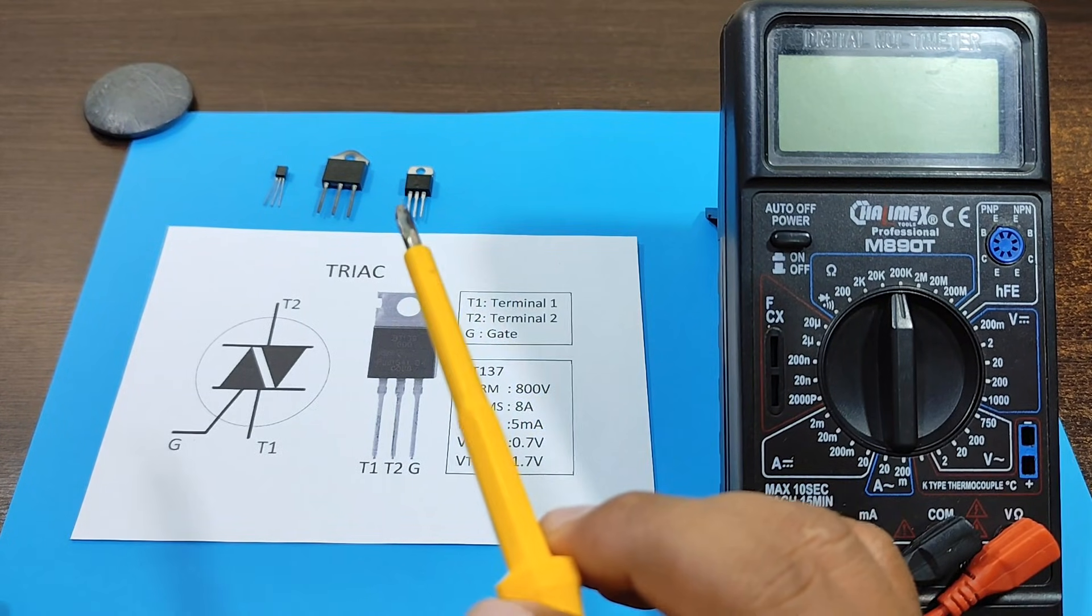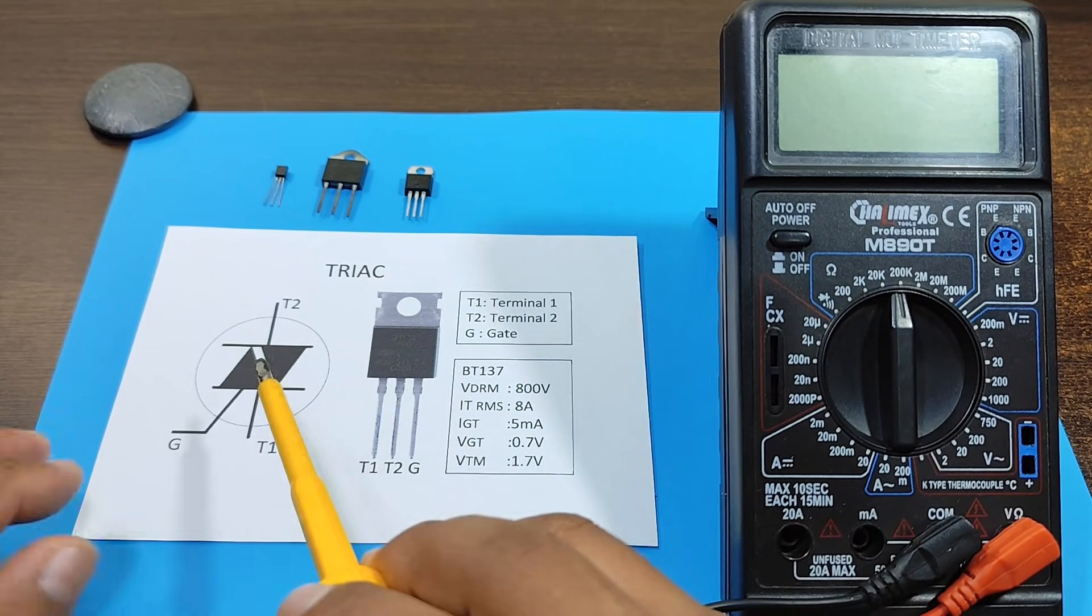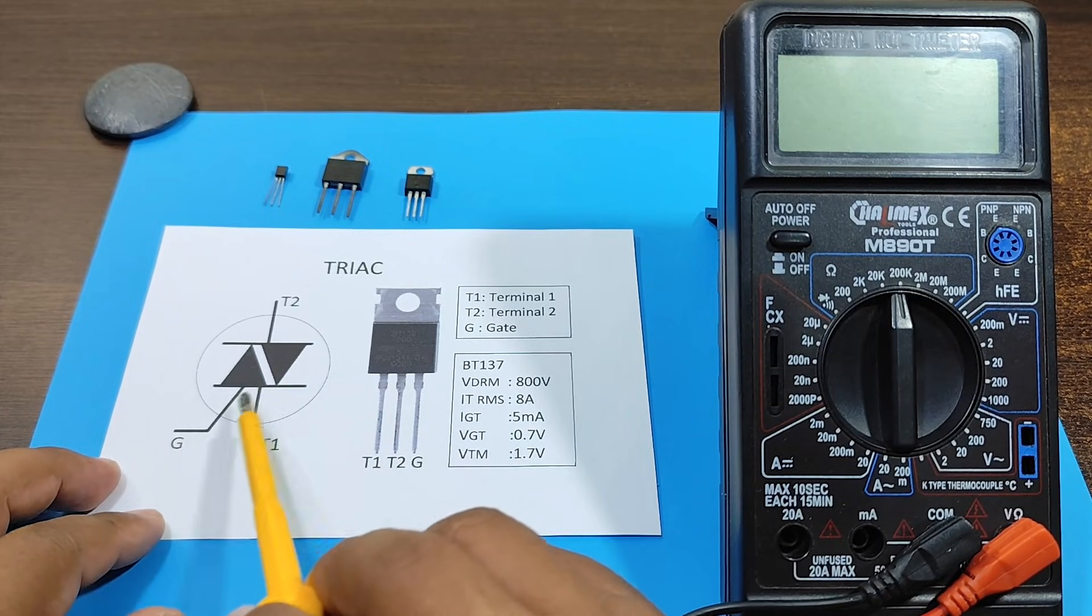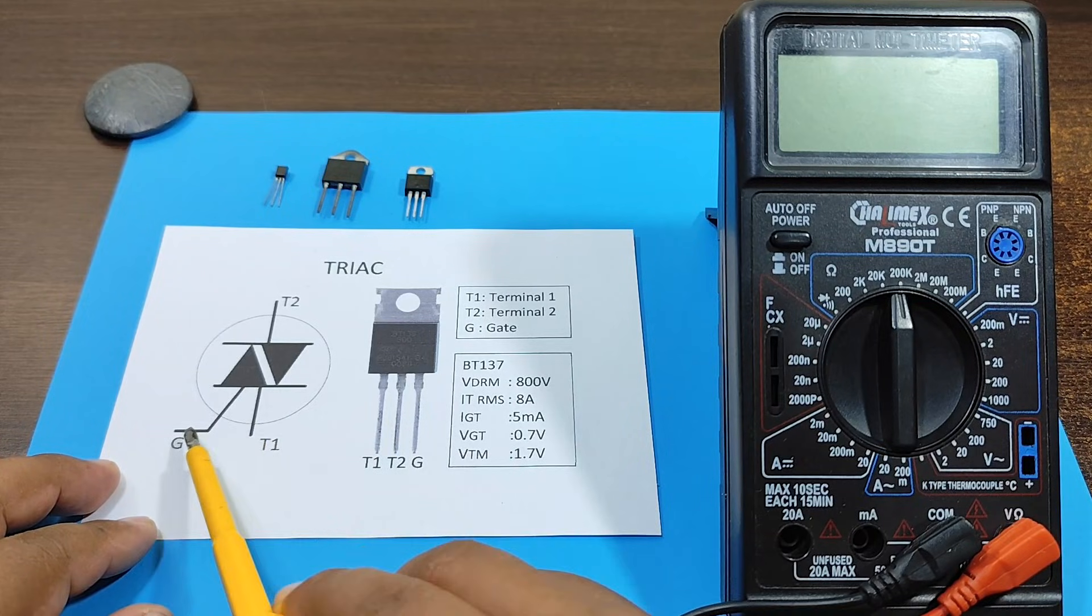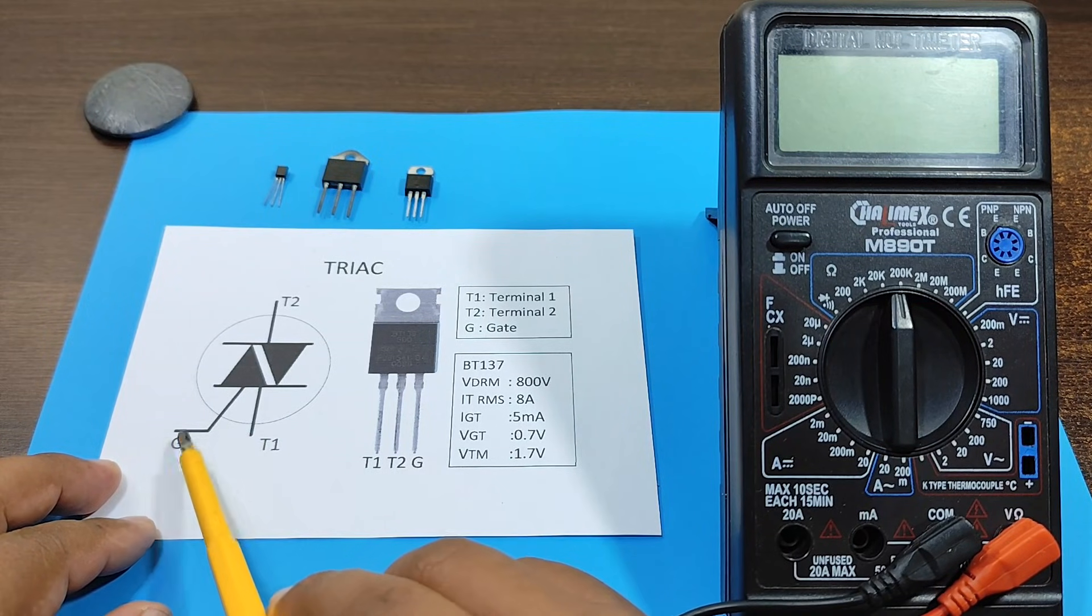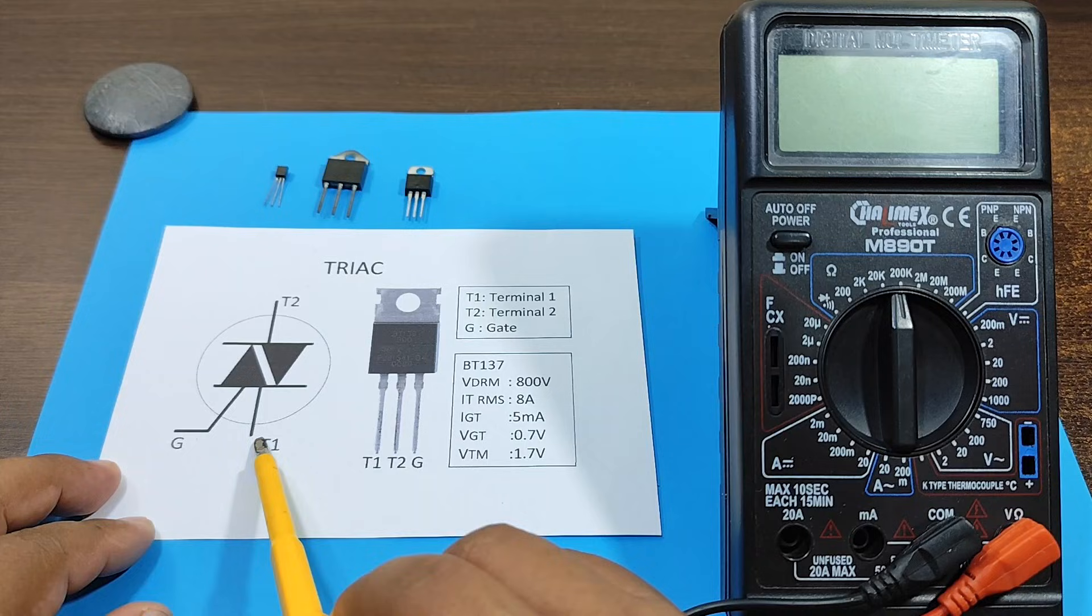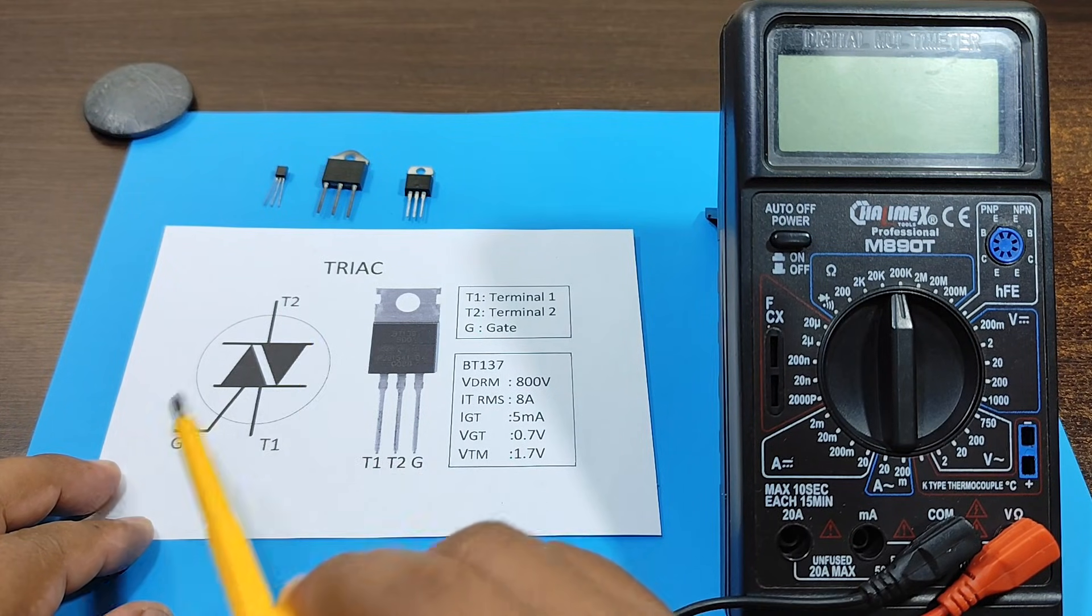Alright, now the first thing we're going to do is analyze the triac symbol. This is the symbol for a triac, where we can see that it has three pins: Gate, T1 or Anode 1, and T2 or Anode 2.